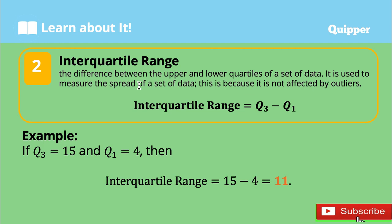Next is the interquartile range — the difference between the upper and the lower quartiles of a set of data. The upper quartile refers to Q3 and the lower quartile refers to Q1. It is used to measure the spread of a set of data, and it is not affected by outliers. The formula is Q3 minus Q1. For example, if Q3 = 15 and Q1 = 4, then the interquartile range is 15 − 4 = 11.